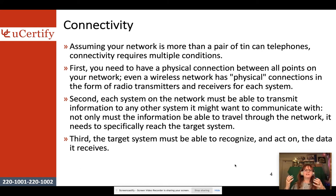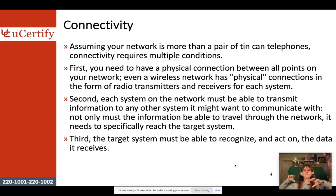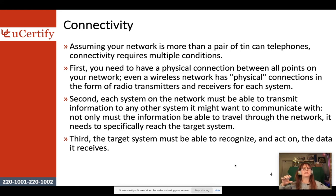Second, each system on the network must be able to transmit information to any other system it might want to communicate with. Not only does the information need to travel through the network, it needs to specifically reach the target system. Each system has to have some form of a connection to every other system, so data can get specifically to whatever device it wants to reach.